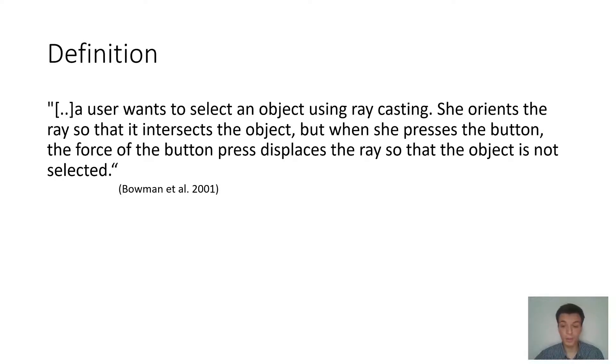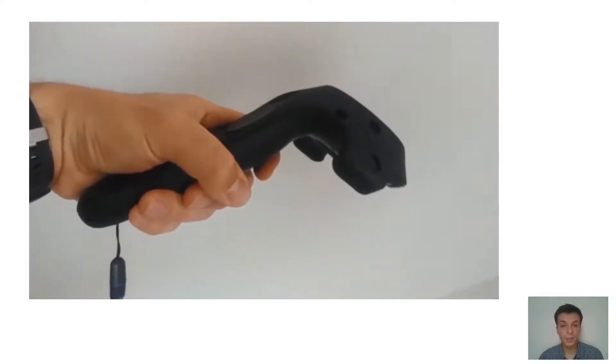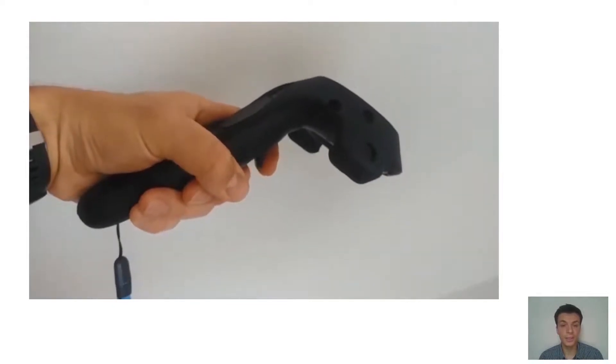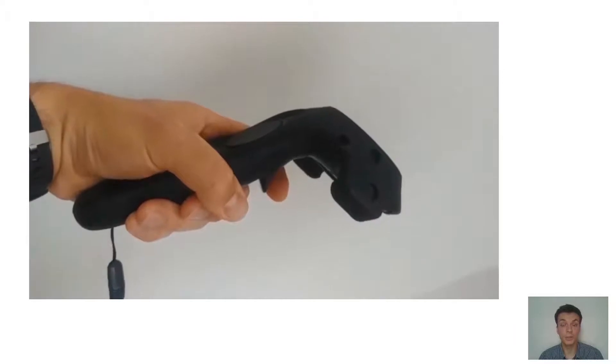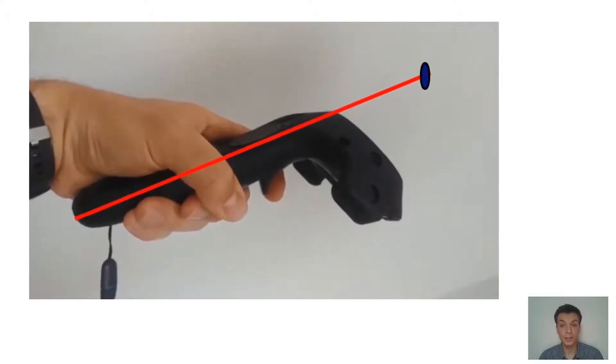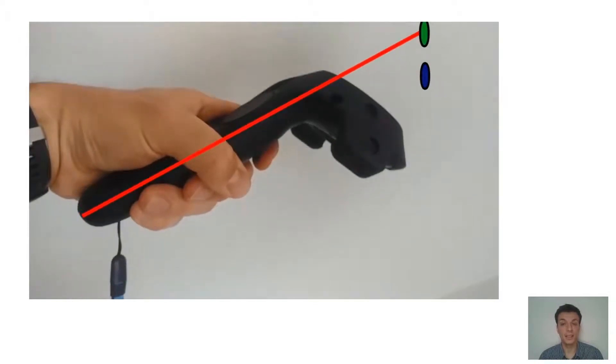To clarify what this means, I have a very exaggerated example of a button press and the following displacement. Using this Vive controller, you can see that whenever I press the trigger button, my controller gets displaced upwards. If I'm pointing at a target that I'm trying to select and I do the trigger press again, my selection ray gets displaced and I end up outside of my target or selecting something totally different.